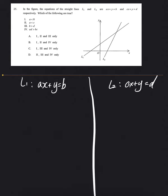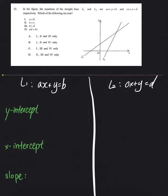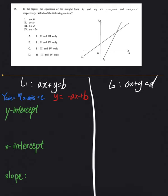First of all, hum inke y-intercept dono nikalenge, then the x-intercept, and also the slope of dono equations. How do we find the y-intercept? Do you remember ke equation of straight line kaisi hoti hai? It is always y equals to slope times x plus c, where c refers to the y-intercept and m refers to the slope.